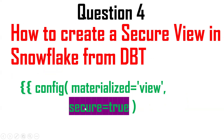By default, a normal view will be created. If you want to make it secure, mention `secure=true`. If you don't want a secure view, mention `secure=false`, or simply leave it — by default it will be a normal view. To make it secure, set the keyword `secure` equal to `true`.